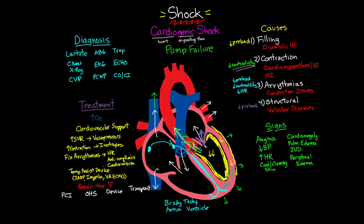That was quite a bit we covered in cardiogenic shock. The main takeaway is that this is a pump failure — a lack of the heart's ability to pump and perfuse blood throughout the body. In this lesson we talked about the main causes of cardiogenic shock, the signs you would see in a patient, the diagnostic tests and procedures to determine what's going on, and finally the treatment modalities in terms of support as well as fixing the underlying problem.